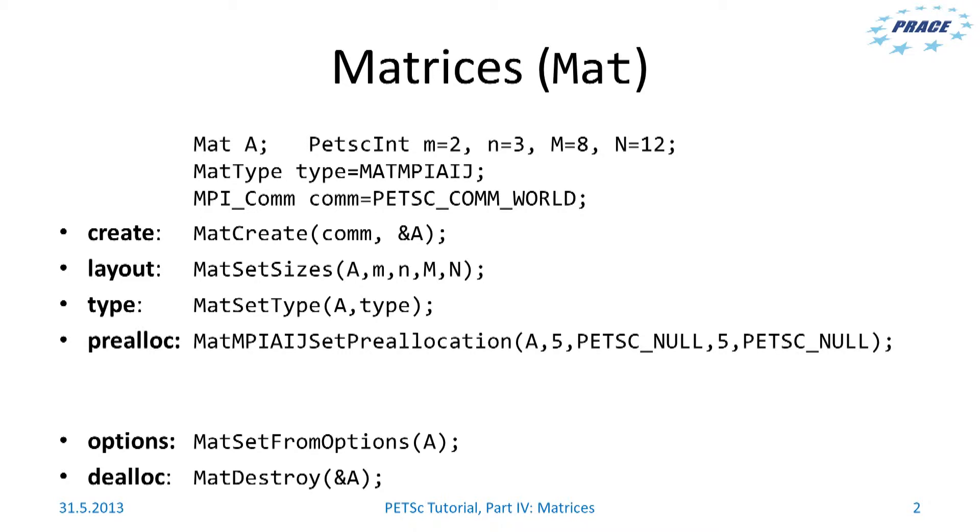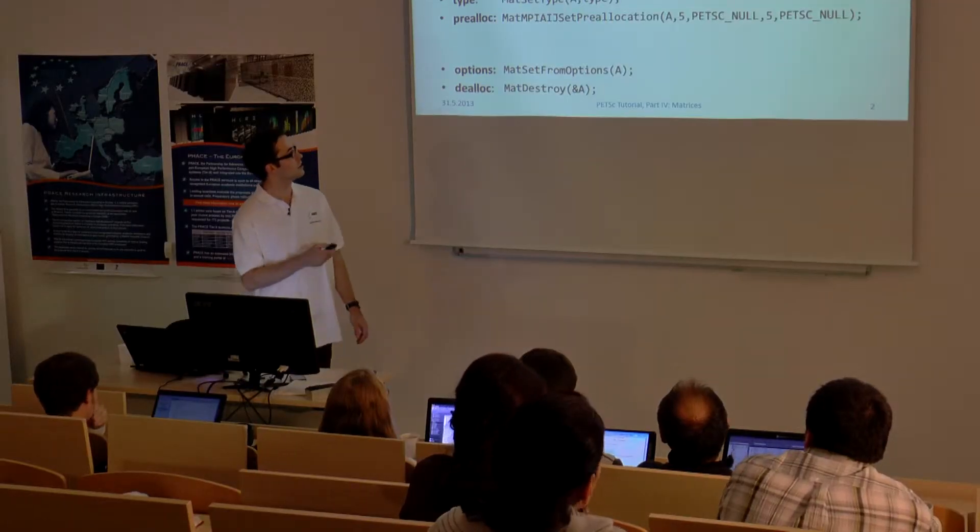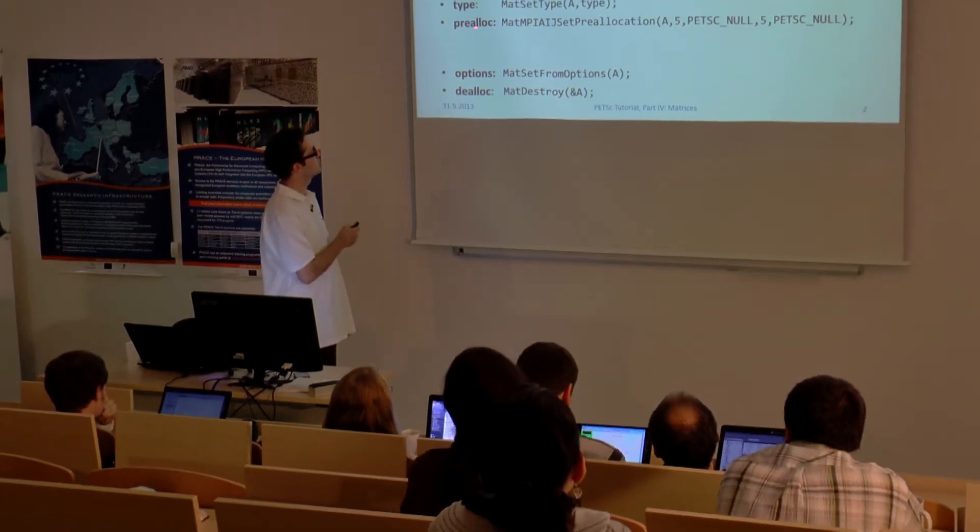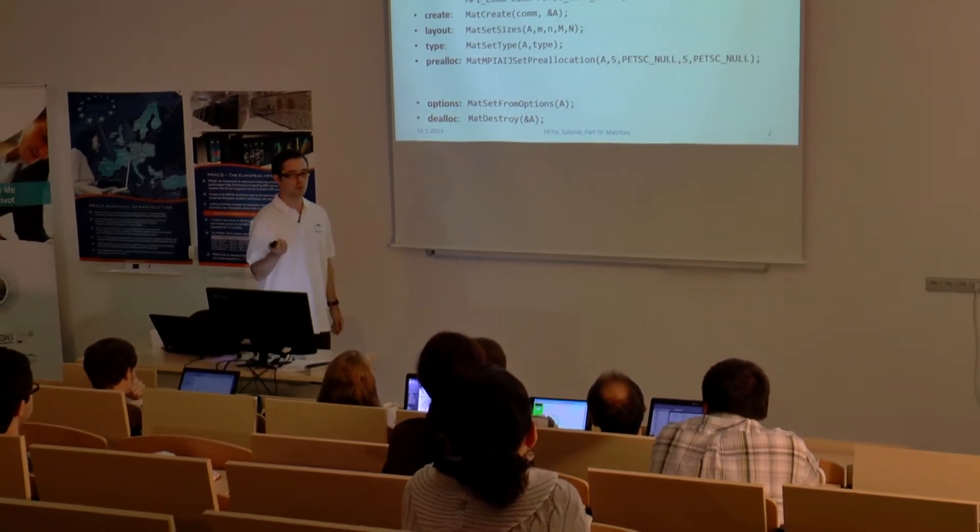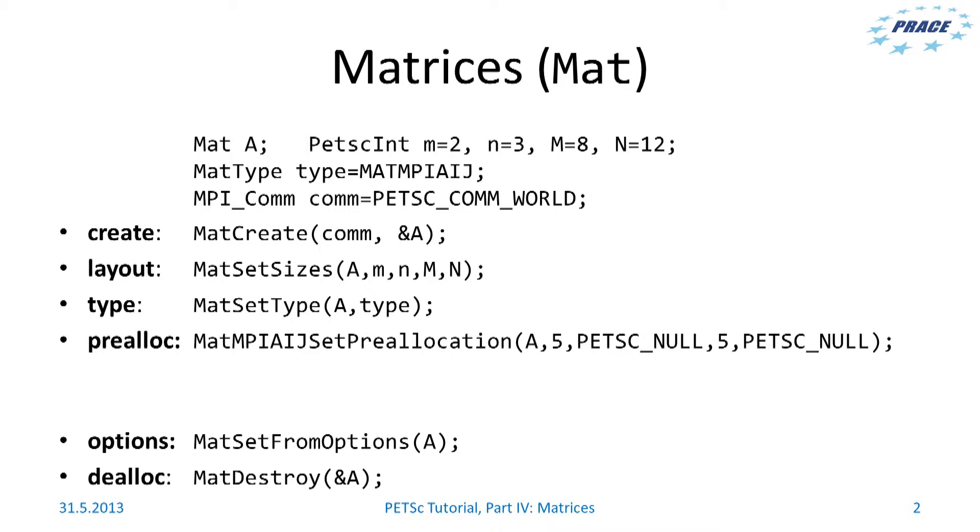The situation with matrices is quite similar to vectors. Create the matrix, set the layout, but now you have the two-dimensional layout. You set the type of the matrix, which can be for example parallel sparse. But in case of matrices, you should have an efficient code call routine like this that sets the pre-allocation of the sparse matrix.